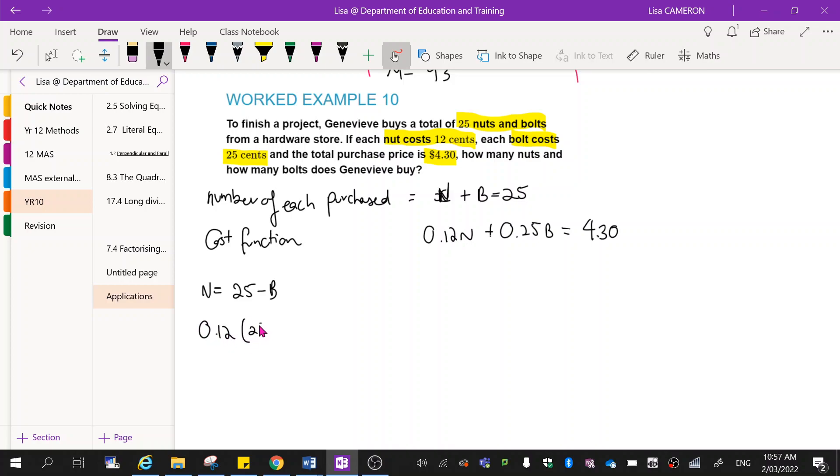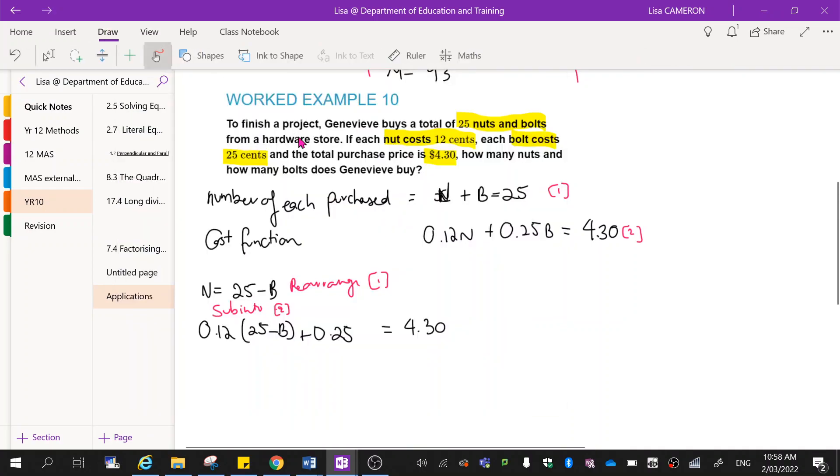Now I'm going to substitute this one back into that one. So 0.12 times 25 minus b plus 0.25b equals $4.30. Now I might just write next to it what I've done. So we rearranged equation 1. And then we sub in equation 2. And over here, I'll just name them 1 and 2.